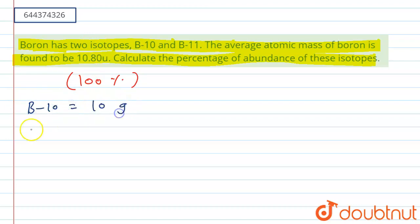And another isotope B-11 which has a molecular mass of 11 grams. So if we suppose we have B-10 isotope have x amount of B-10 isotope, so we then have B-11 isotope as 100 minus x.